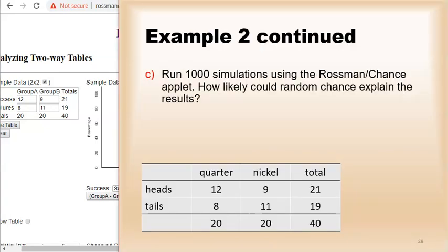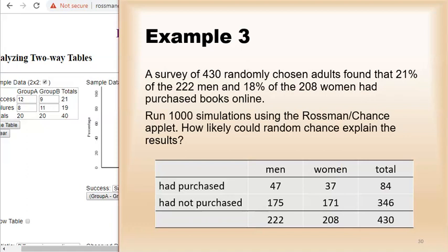You've met the question: how likely could random chance explain the results we're seeing? We got about 25%, so pretty likely. Let's try another one.